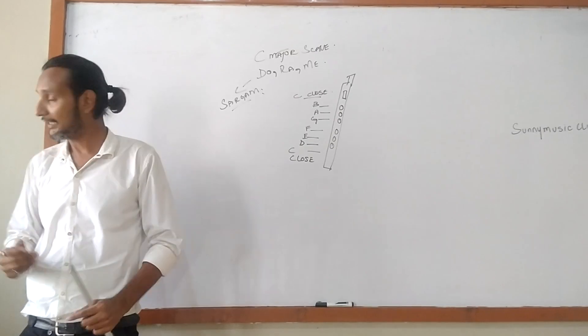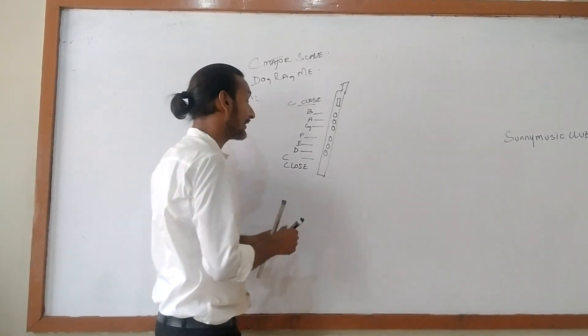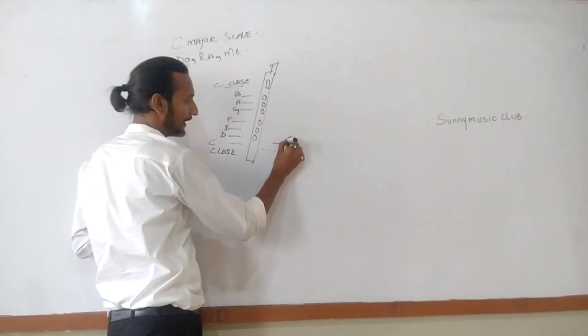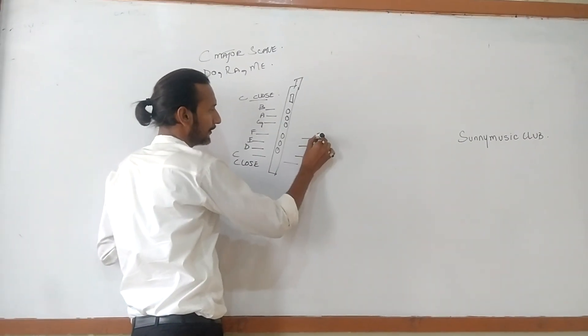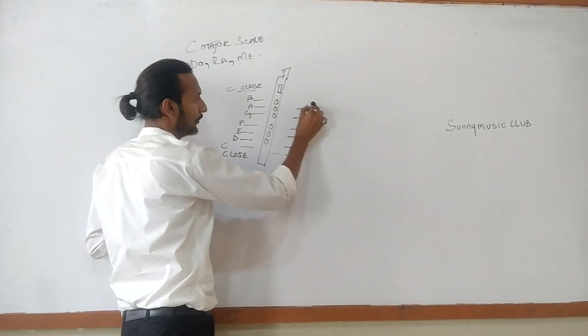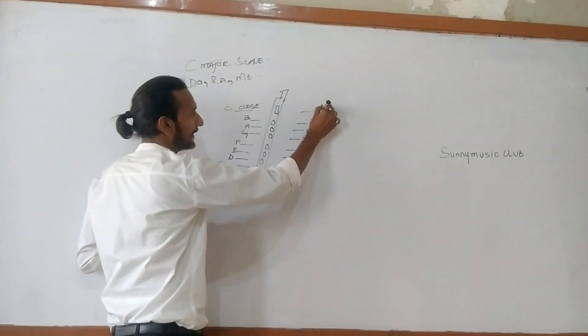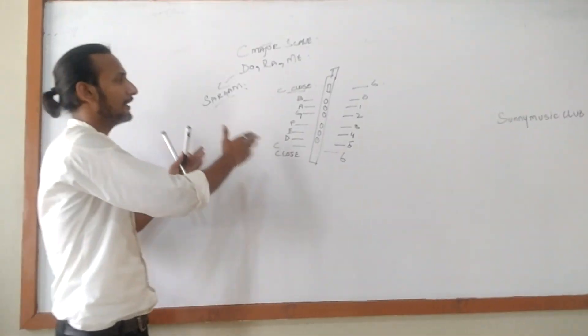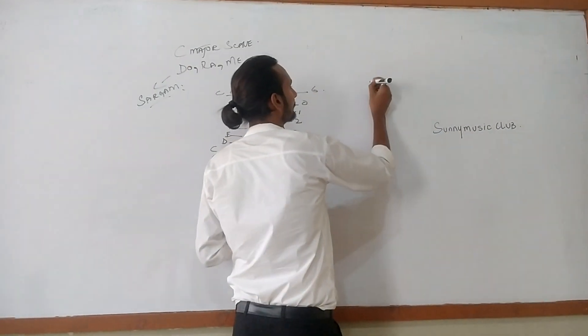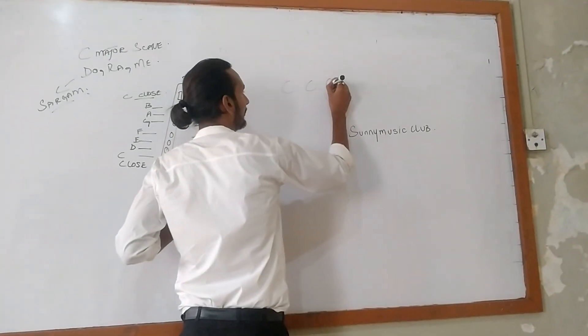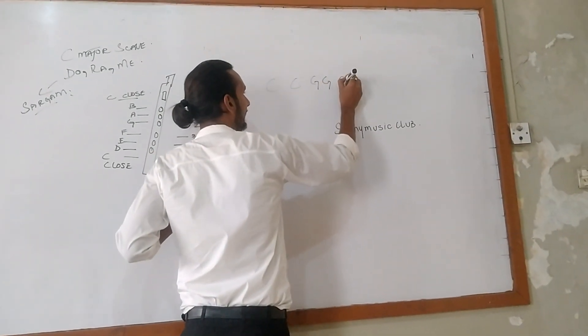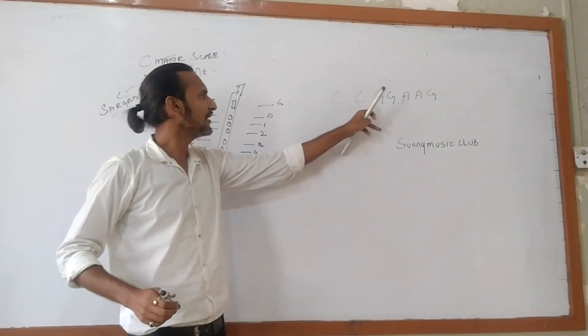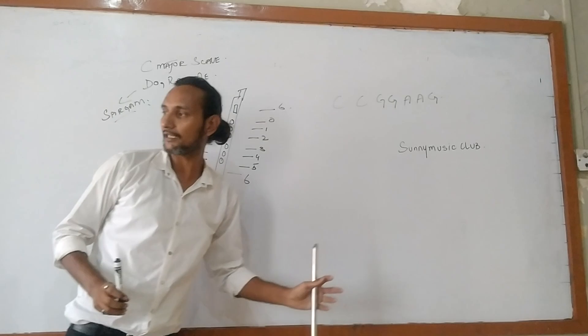According to the alphabet, you will go like this. And if I show you the numbers. See? This is my C close. Now that is 6, 5, 4, 3, 2, 1, 0 and again 6. For example, if I add something like this. C, C, G, G, A, A, G. Now this is C, C, G, G, A, A, G.